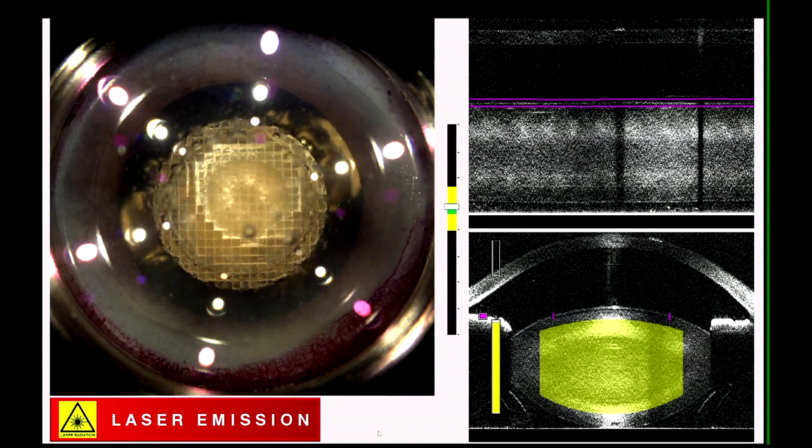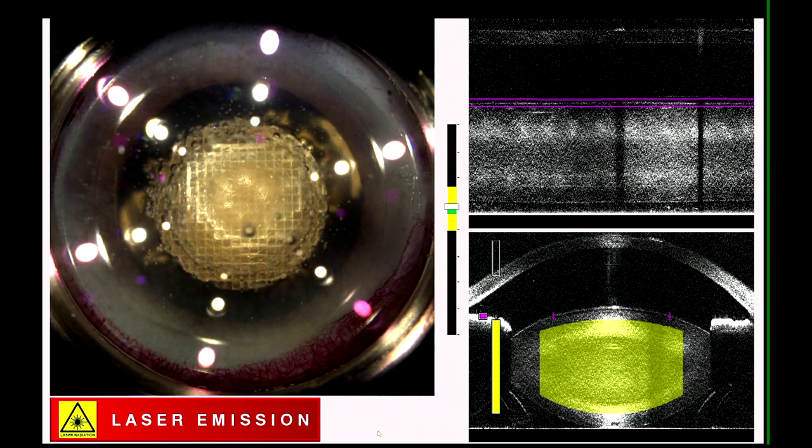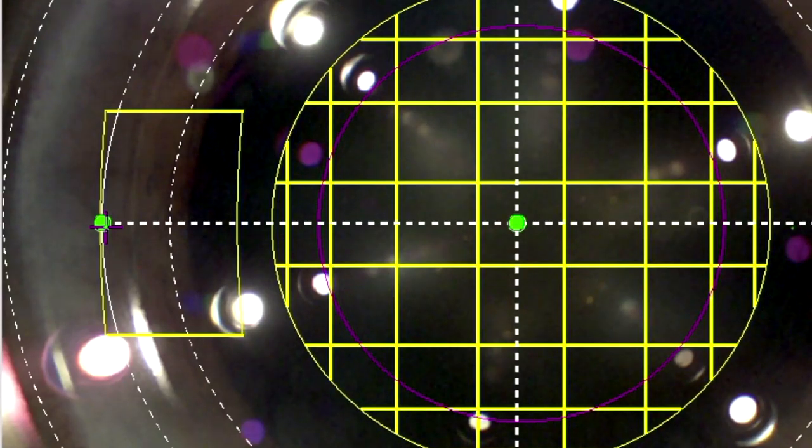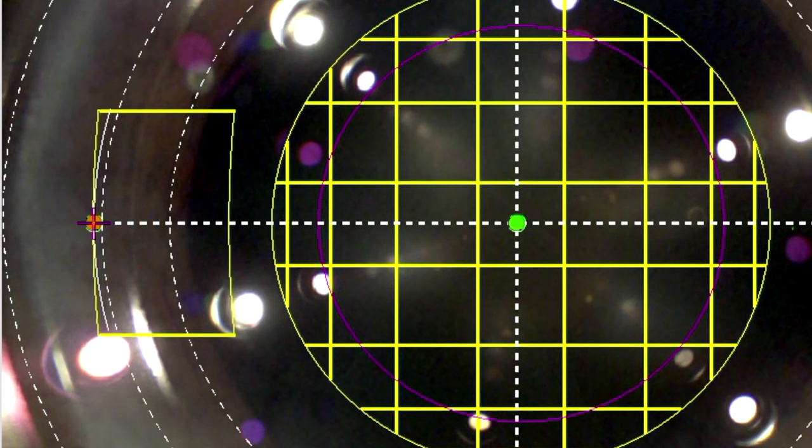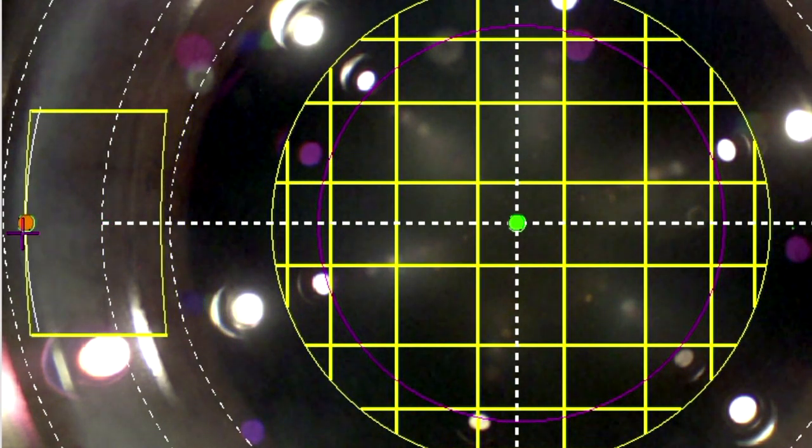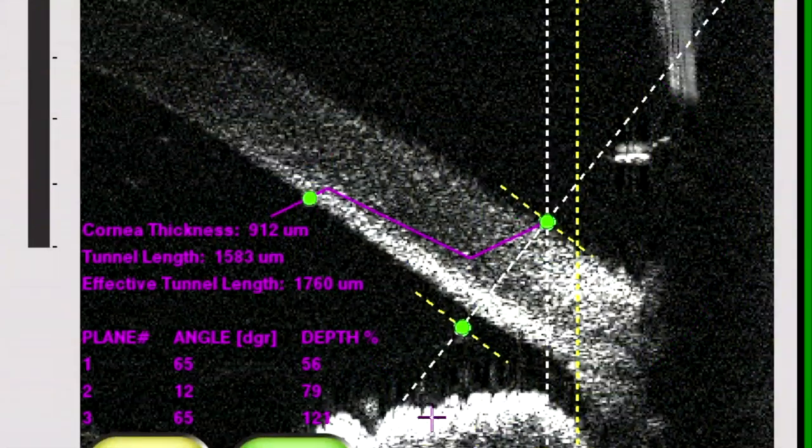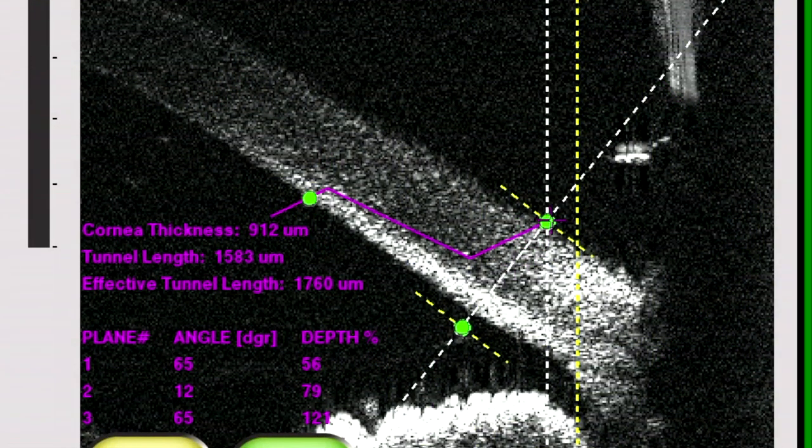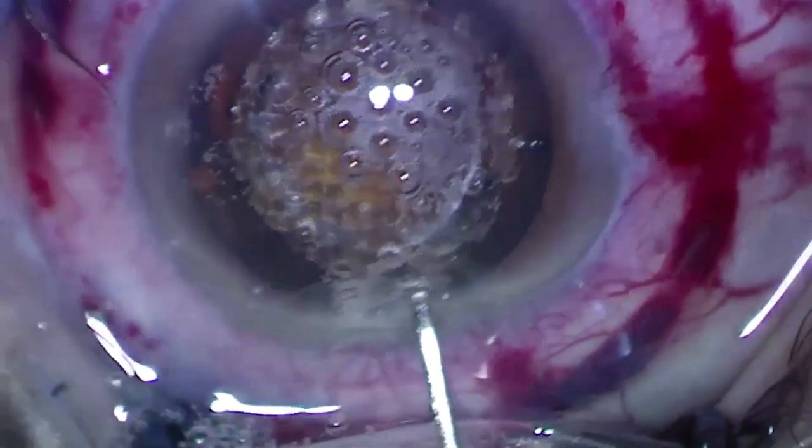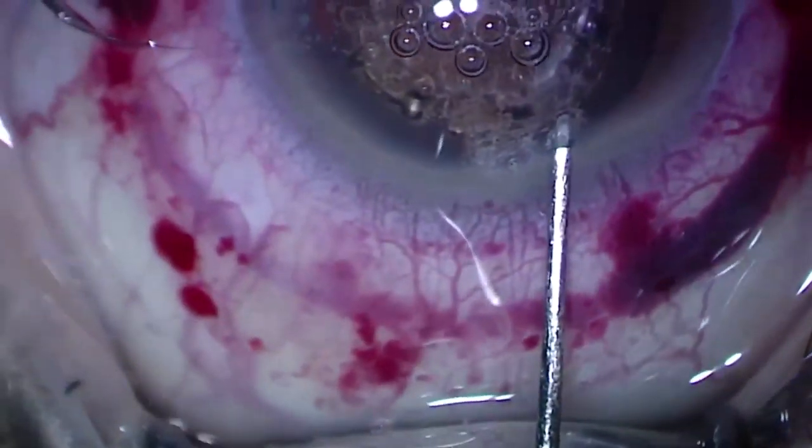In theory, application of femtosecond laser to the cornea for incision making should have allowed for standardized and systematic creation of many types of incisions. However, one limitation of the laser is that it has to be applied to transparent tissue in order to work. Placement of the incision very close to the limbus, which should allow for safer and more effective surgery for many surgeons, led to incisions that either would not open or take too long to open.